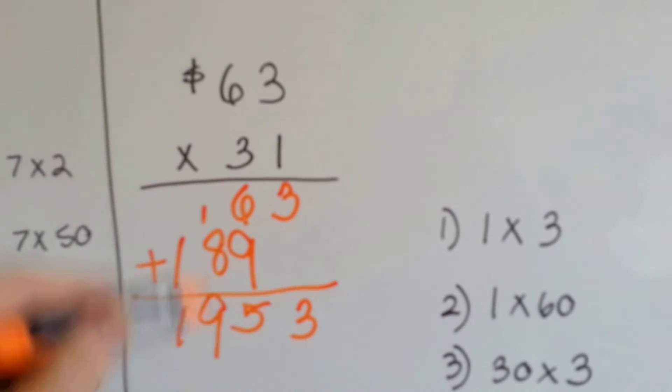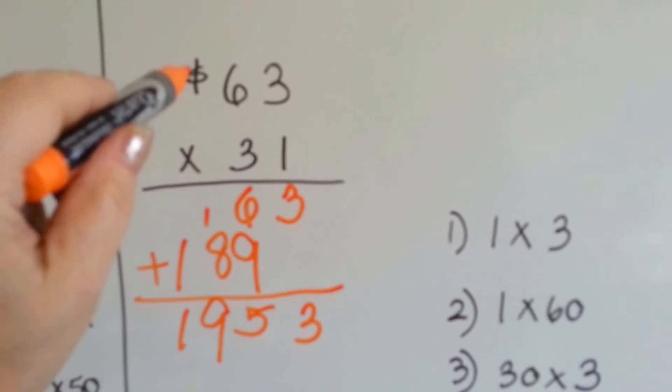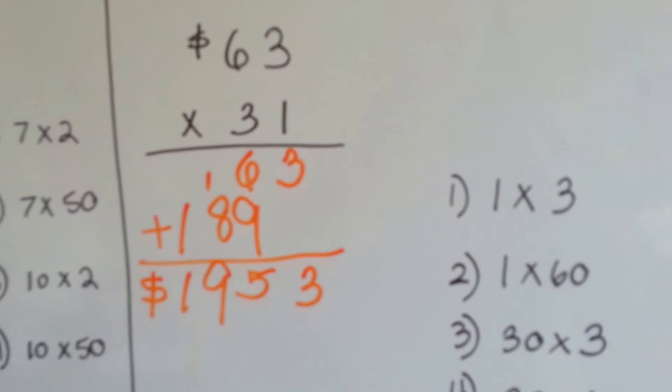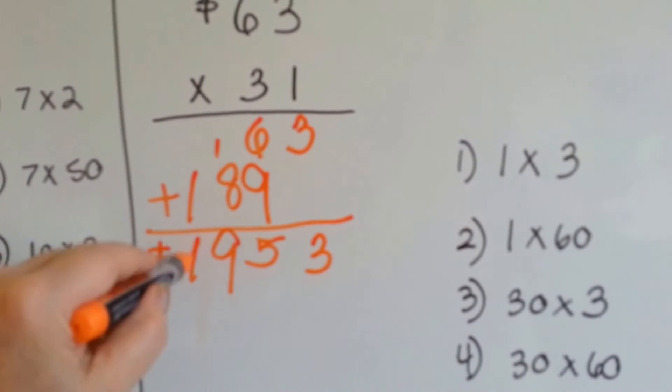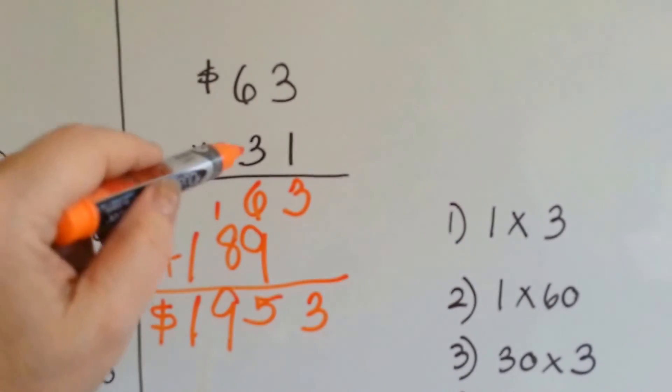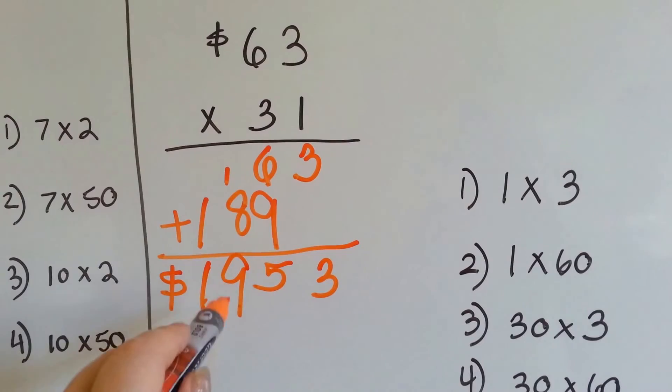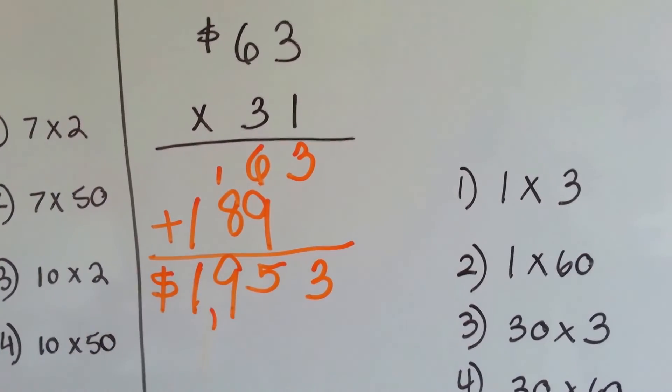So, we have a dollar sign. $63 31 times is $1,953, okay?